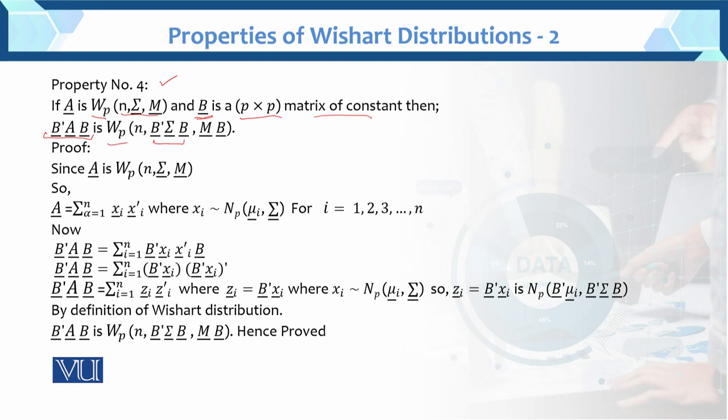Here you have the variance and this is the mean. Because B is a constant matrix, it is a constant. So you have a variance. What is B'ΣB? That means MB — the mean transformation.